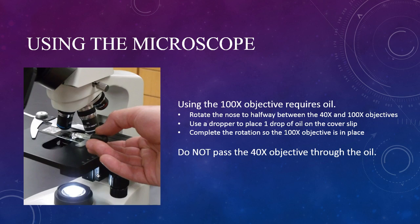Oil redirects that light to the objective lens. We add the oil to our setup by moving the 40x objective away from the slide, but stopping before the 100x is in place. Add just a drop of oil to the cover slip, then complete the rotation with the 100x in place.